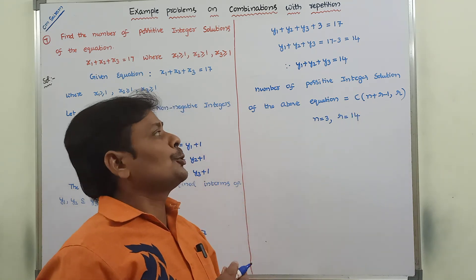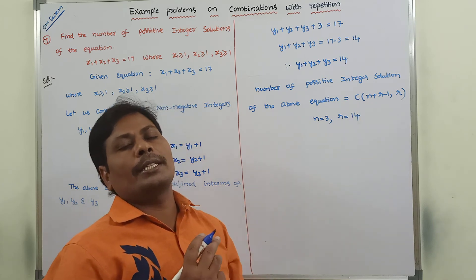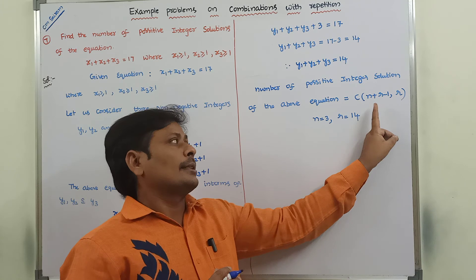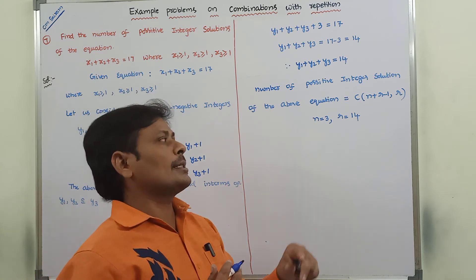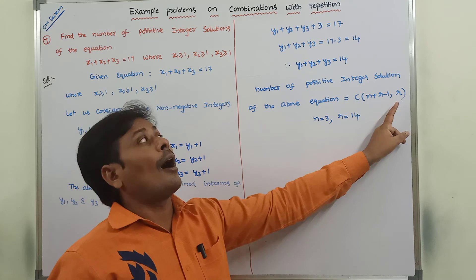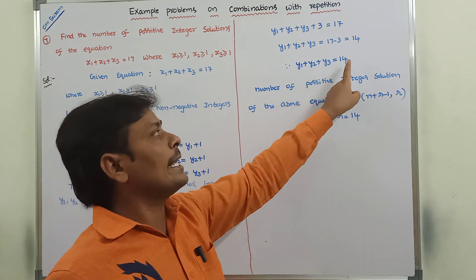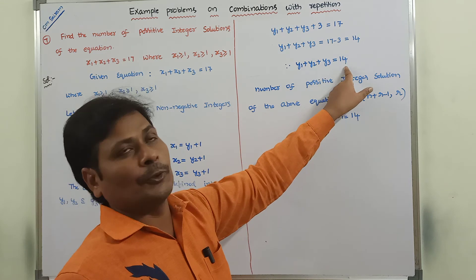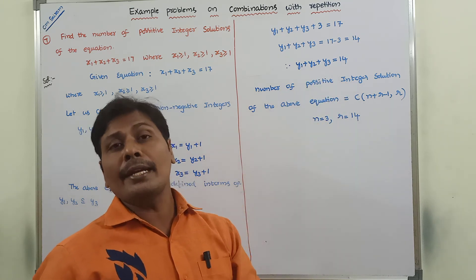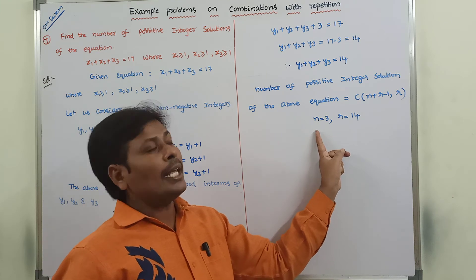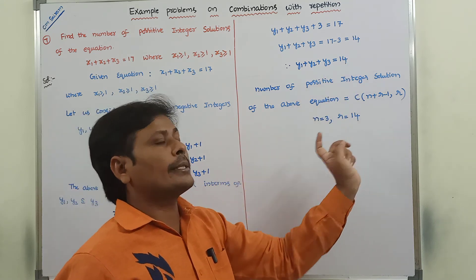This formula has two interpretations. The second interpretation is: the number of non-negative integer solutions equals C(n plus r minus 1, r). Here y1, y2, y3 are non-negative integers whose sum is equal to r. Here r value is equal to 14, and the number of non-negative integers is 3, so n value is equal to 3 and r is equal to 14.